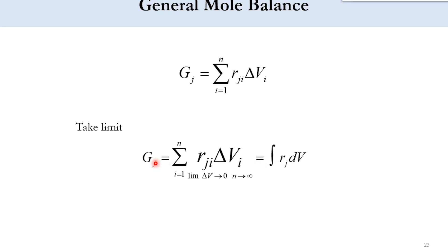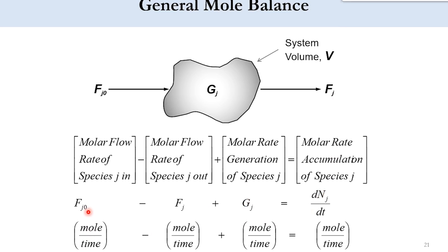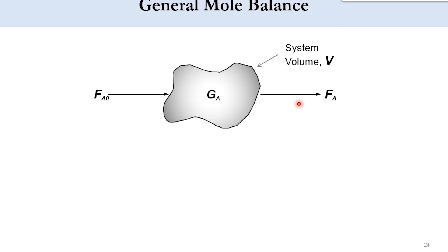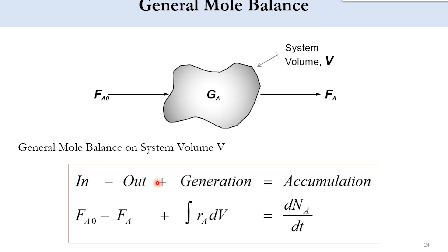So applying the limit we finally get this relation integral r_j dv. So substituting the value of g_j in the first equation, we get f_a0 minus f_a plus generation, where g_j is replaced by integral r_a dv, equals d n_a over dt. So this is the general mole balance equation which we will use once we are deriving the mole balance equations for batch reactor, CSTR, PFR, and PBR.